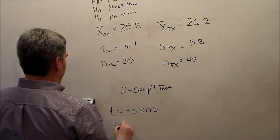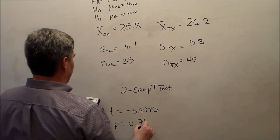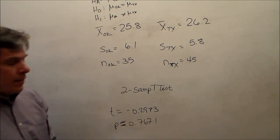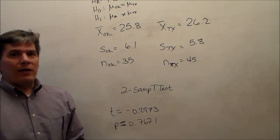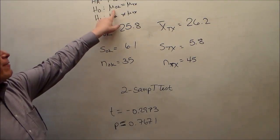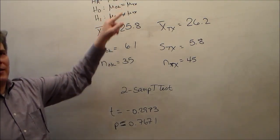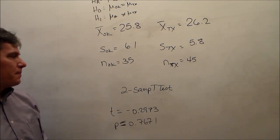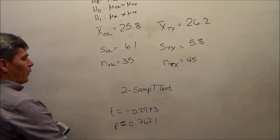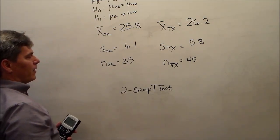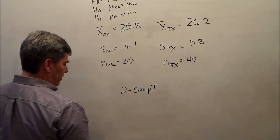Since p is greater than alpha, we failed to reject the null hypothesis. We did not detect a difference in the average corrosion rate between Oklahoma and Texas. There may be a difference, we just didn't detect it. Now if we want to do a confidence interval, which is part B of this, we'll do 2-samp-t-int.